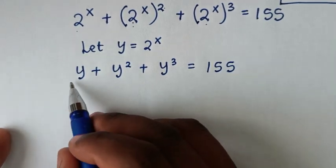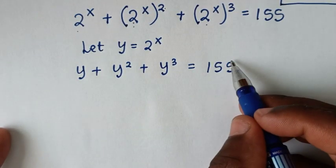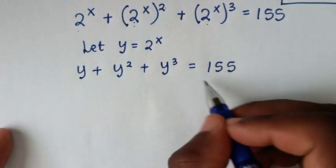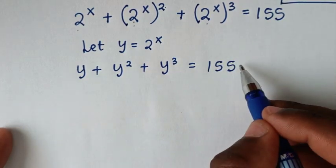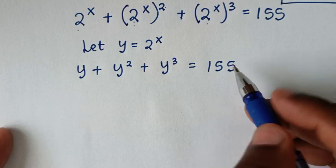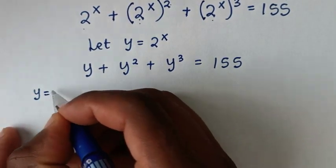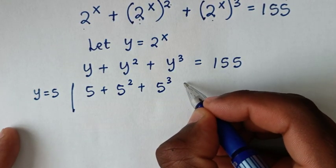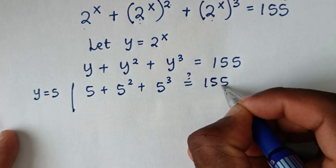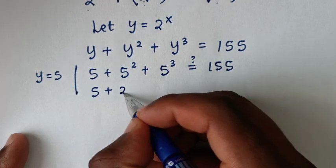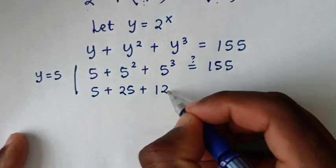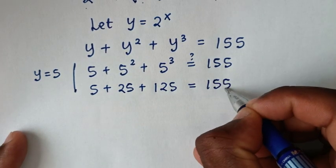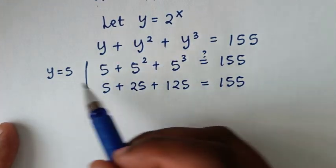In the next step, since 155 is a large number, if we check y equals 1 or 2 it will not equal 155. Testing up to y equals 5: 5 plus 5 squared plus 5 cubed — that is 5 plus 25 plus 125 — equals 150 plus 5, which is 155. So y equals 5 is one factor of this cubic equation.